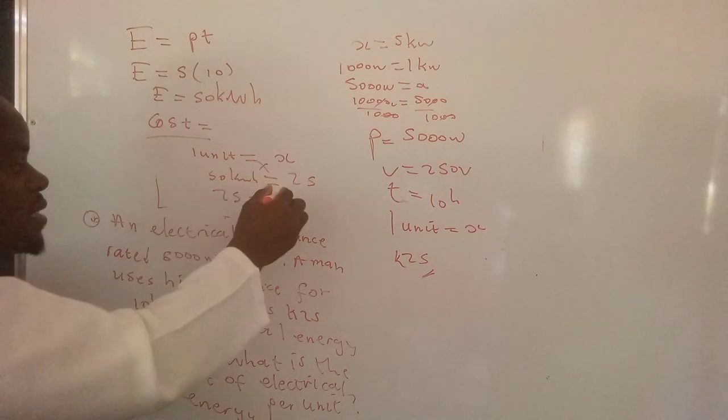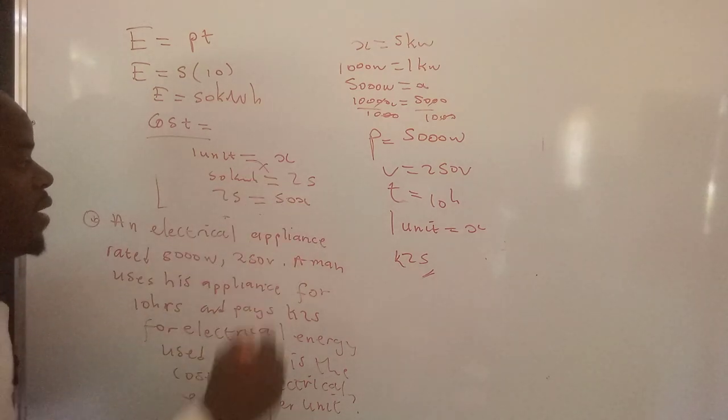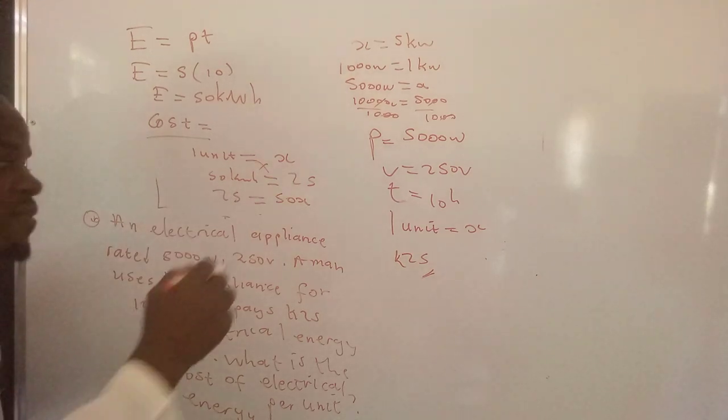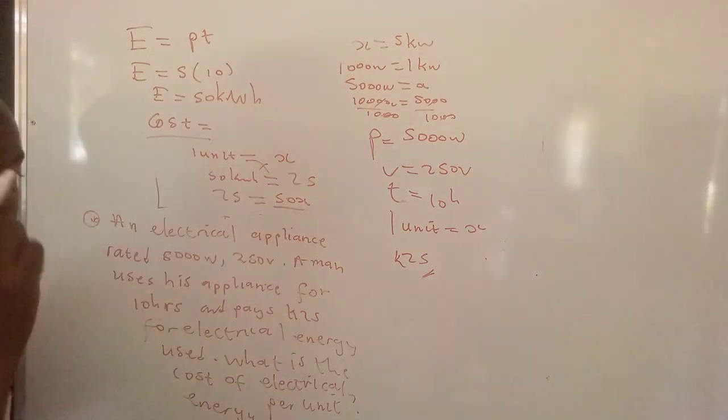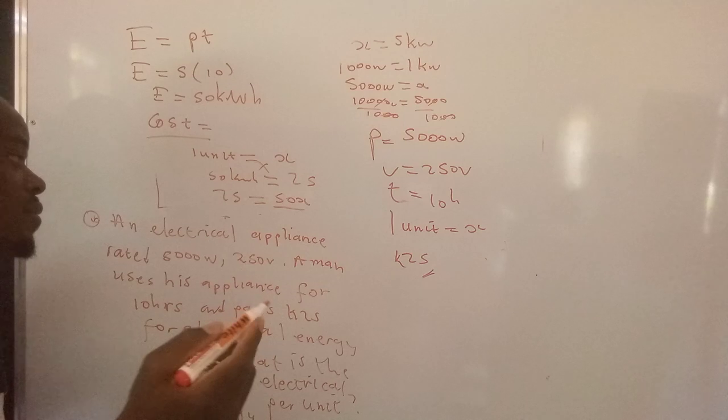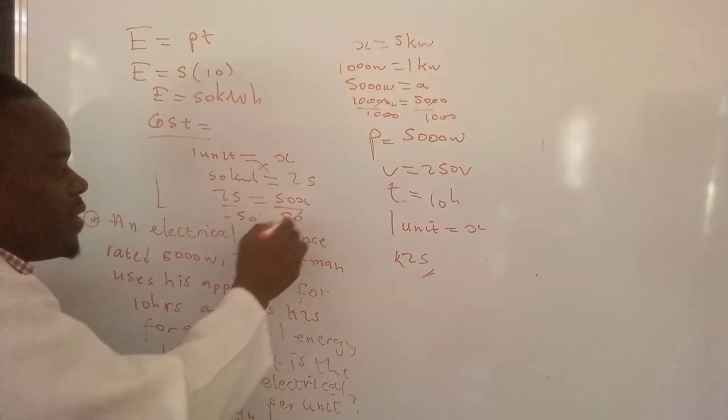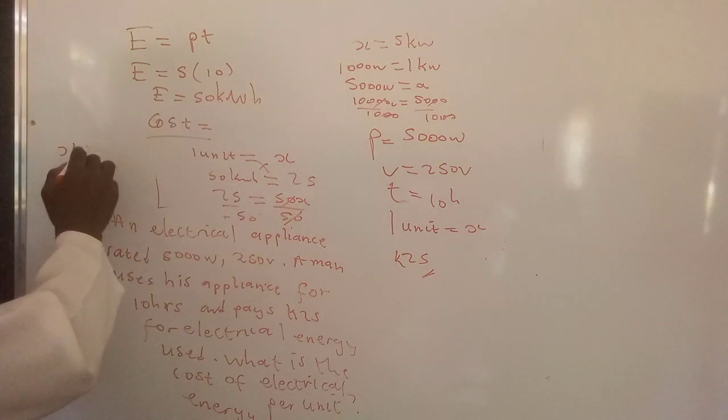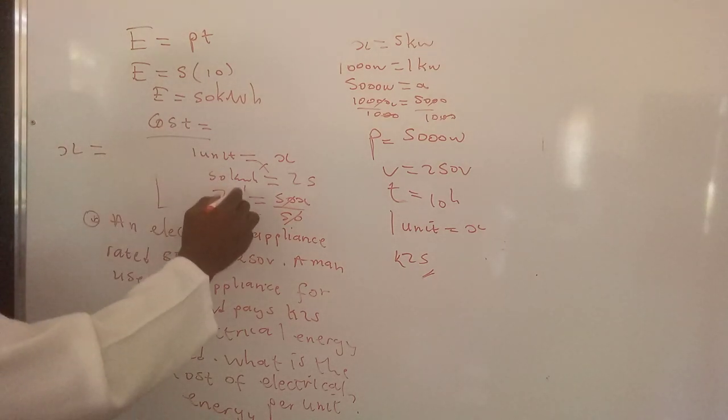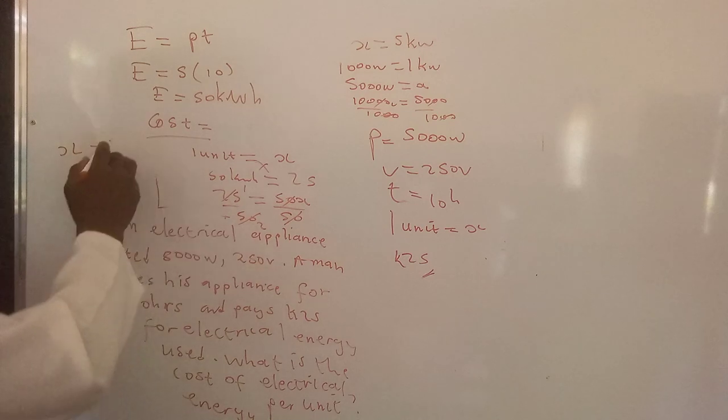And then 50 times x, that would be 50x. Our interest is to know the value of x which is the cost of 1 kilowatt per hour of energy. 50 there, 50 there cancel out. We're going to have x which is equal to 25 divided by 50. That's 2 into 1.